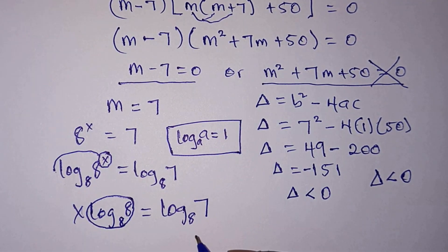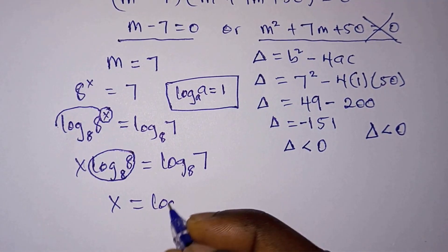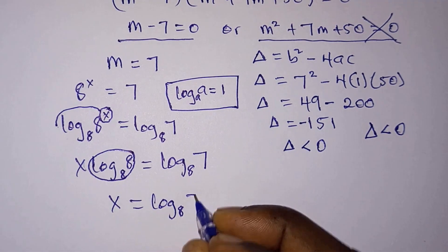Now this log in base 8 of 8, like we said before, is equal to 1. Therefore, we have our final answer to be x equal to log in base 8 of 7.